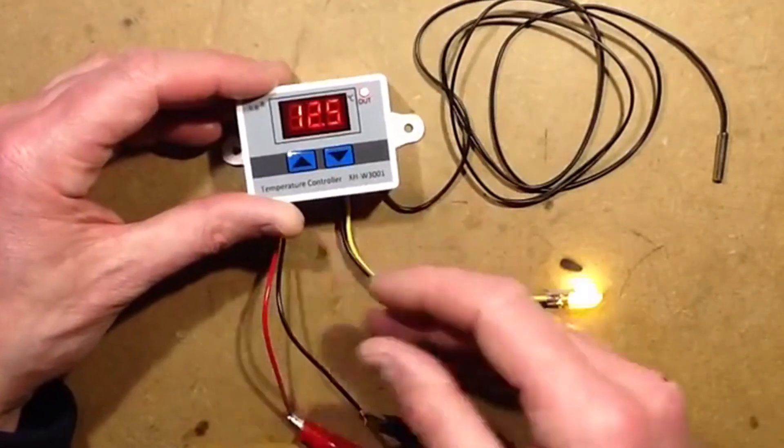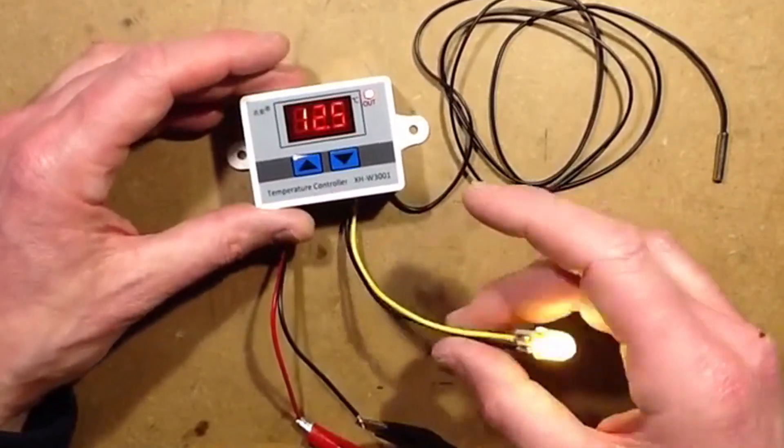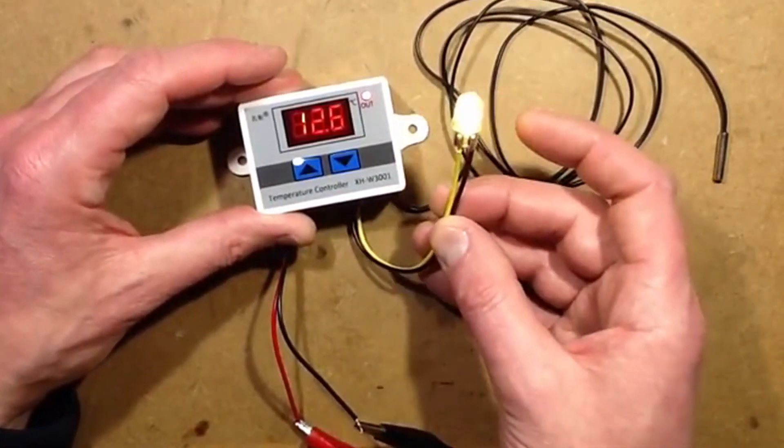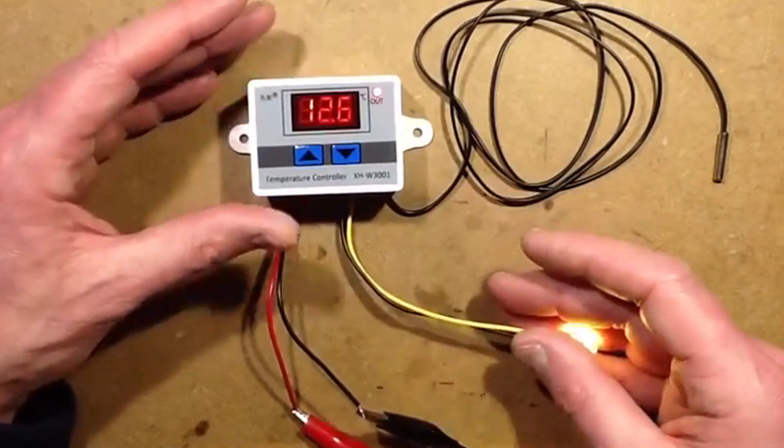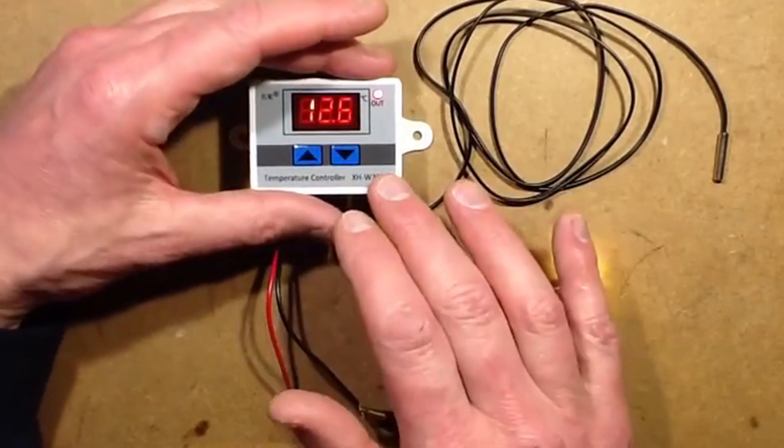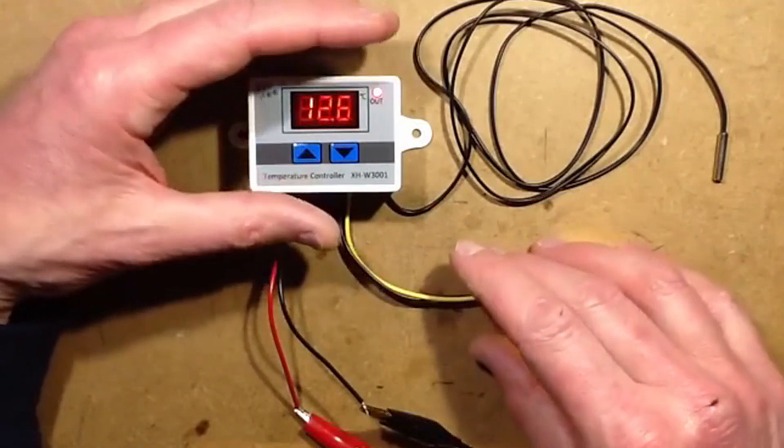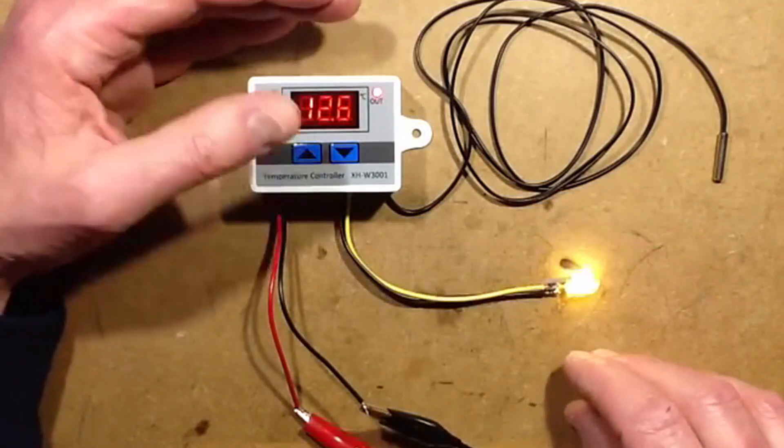This is a completely enclosed module that takes 12 volts in. The output is not a set of volt-free contacts, it's actually 12 volts that comes straight back out. If you've got a higher load, it supposedly says you can switch 10 amps with it, but I never trust those little relays.